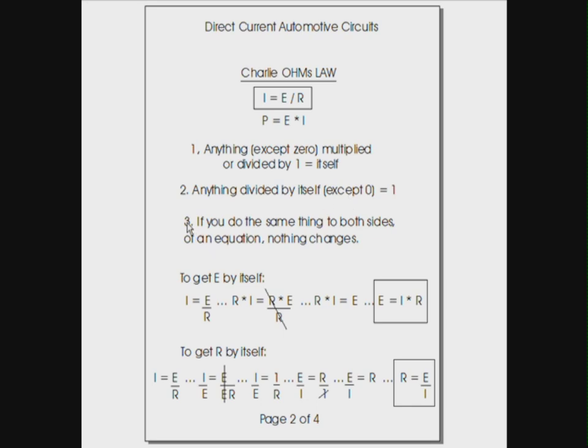Okay, the third rule, and this is the last rule, these simple three simple rules will get you through this whole process. Rule number three, if you do the same thing to both sides of an equation, nothing changes. So for this equation, if I add five to the left side and I add five to the right side, I plus five is still equal to E over R plus five. So we don't change the equations. The equation is still valid. We can divide both sides by something. We can multiply both sides by something. It doesn't matter. As long as you do it to both sides, the equation stays valid.